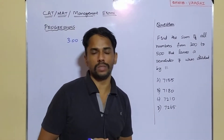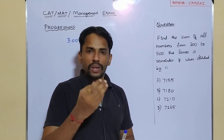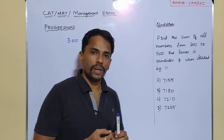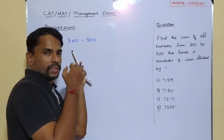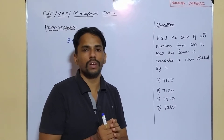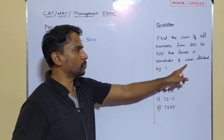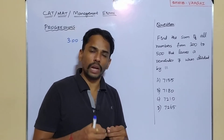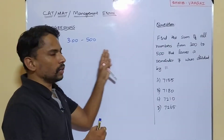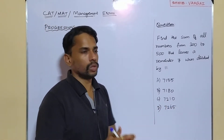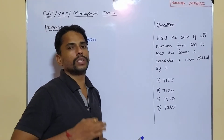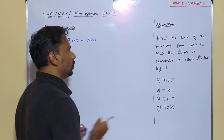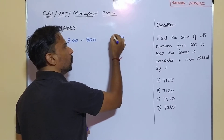In this range, we have to take numbers where dividing by 11 leaves a remainder of 7. To find the very first such number between 300 and 500, we'll use the method of division. Dividing the boundary value itself will give us a clear idea about the remainder. So I'm going to start from 300 and divide 300 by 11.